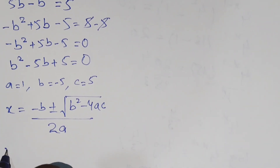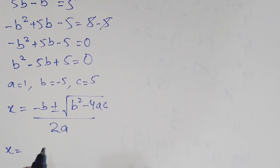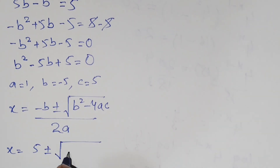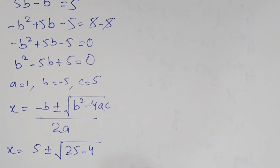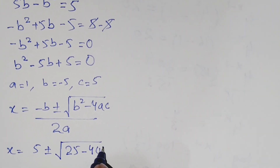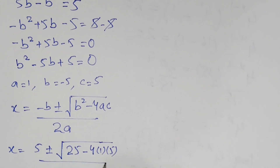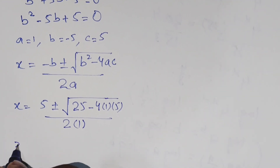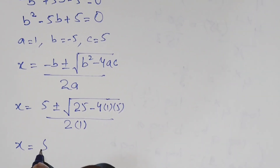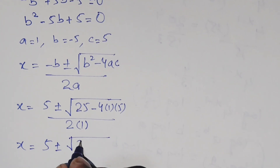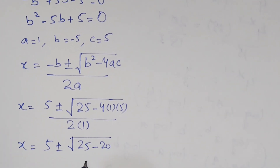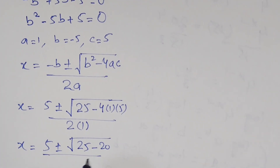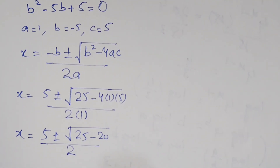We substitute the values: negative b is negative of negative 5, which gives plus 5. Then b squared is 25, minus 4 times a (which is 1) times c (which is 5), all over 2 times a (which is 1). So x equals 5 plus or minus the square root of 25 minus 20.